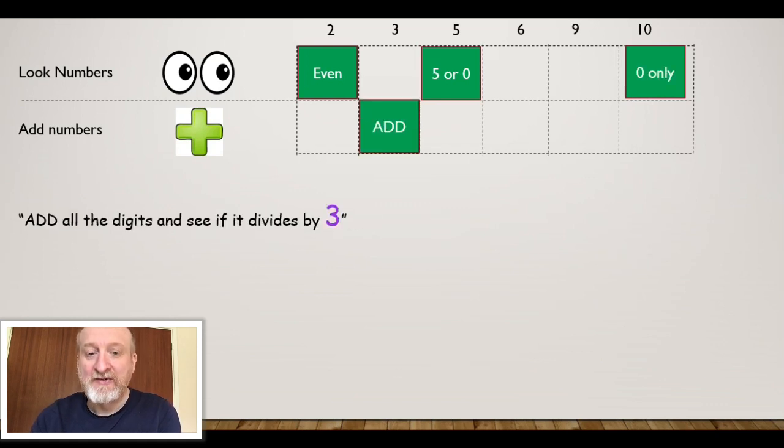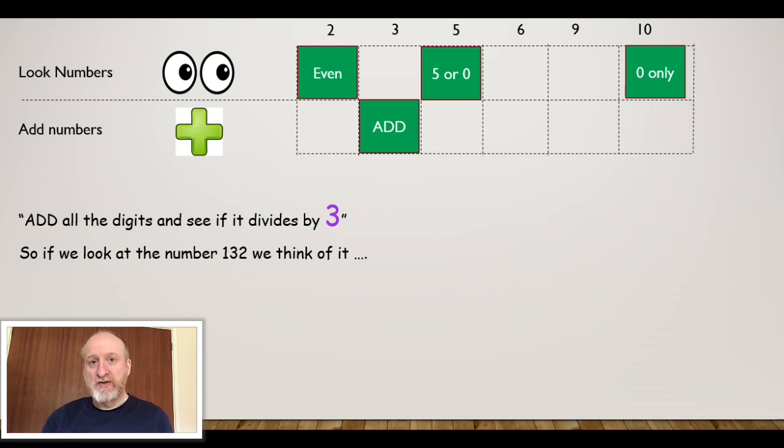Okay, so now we get to the first of the add numbers, and I call it an add number in the divisibility rule for 3 because we're going to add digits up. Here we go: add all the digits and see if that number is divisible by 3. So if we look at the number 132, we think of it like this: 1 + 3 + 2, there's your 132.